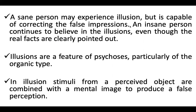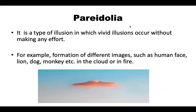This is the mode of action of illusion stimuli. Pareidolia is a type of illusion in which vivid illusions occur without making any effort. For example, formation of different images such as a human face, lion, dog, or monkey in the cloud or in the fire.